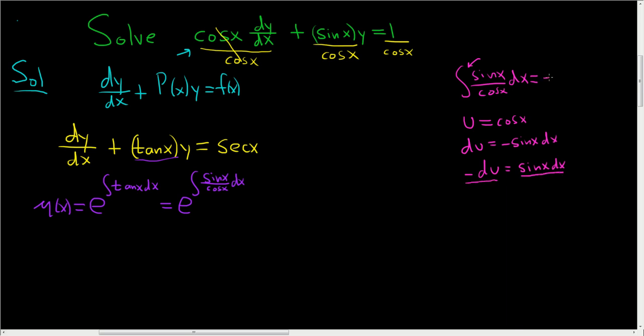That's negative du, so negative du over u. So this is negative ln absolute value of u, and u is cosine. And plus our constant.